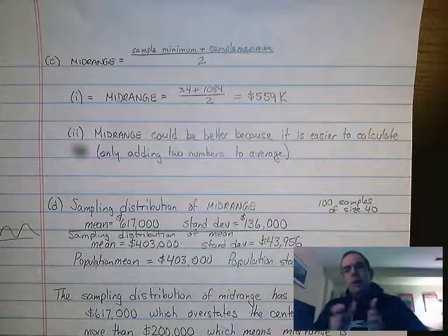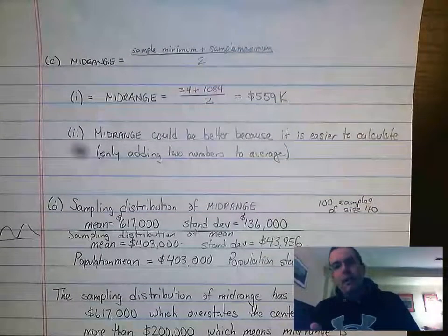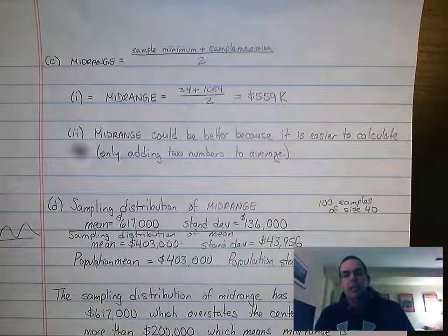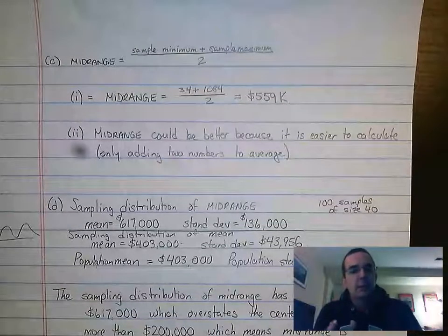Whereas with mean, we'd have to add up all 40 data values, divide by 40. So it's a little bit more complicated. That would be my best way to explain it.